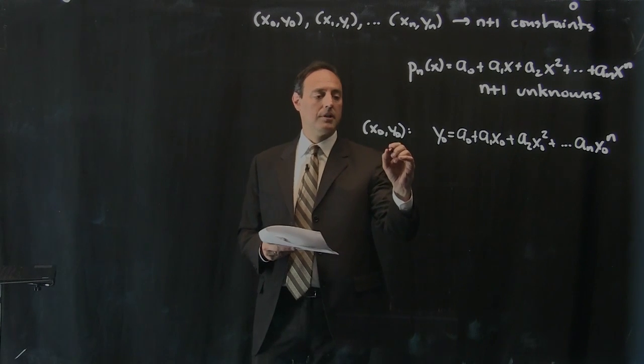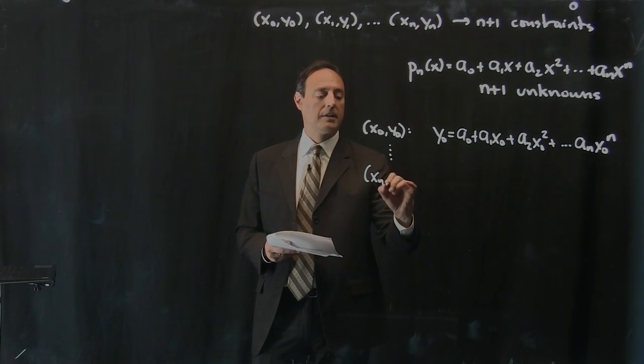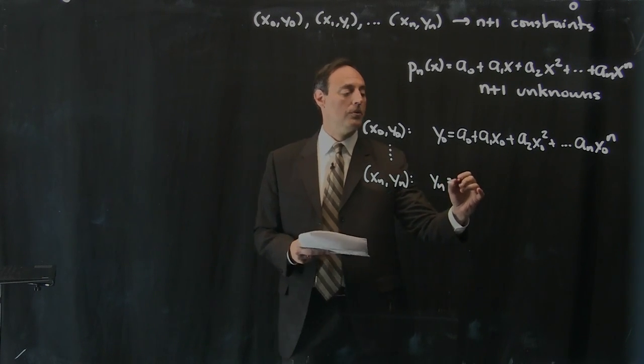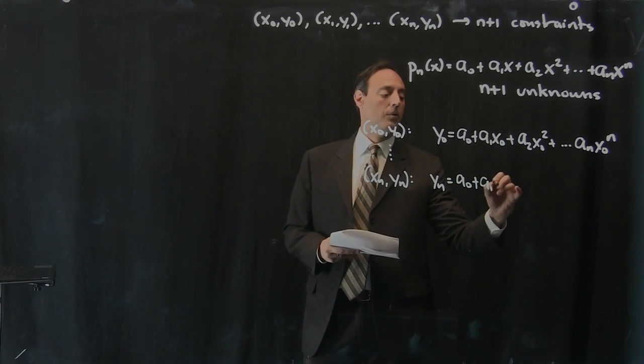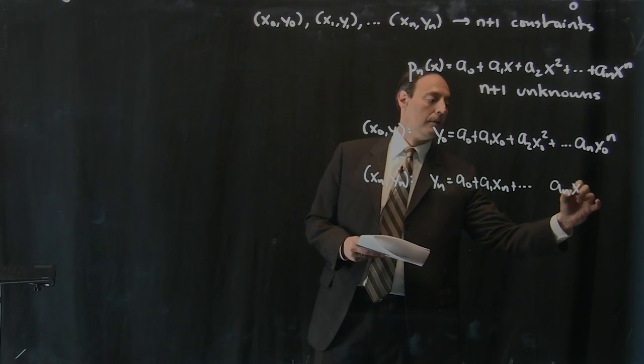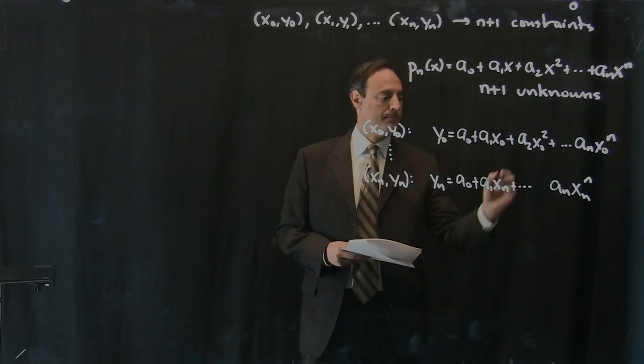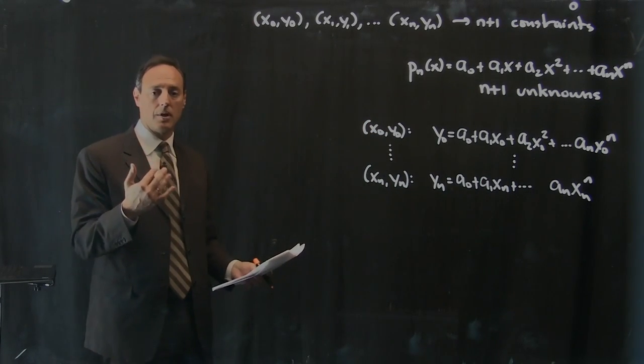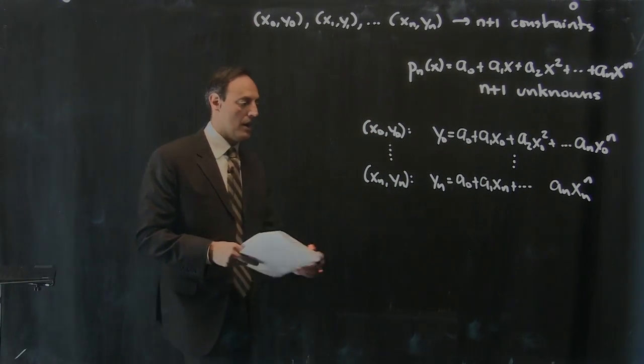And I can continue this process all the way down to the xn, y of nth point, which will give me y of n is equal to a0 plus a1 xn plus all the way up to a of n, x of n to the n. So what I have here, then, is n plus 1 equations, n plus 1 unknowns. And I can solve this.